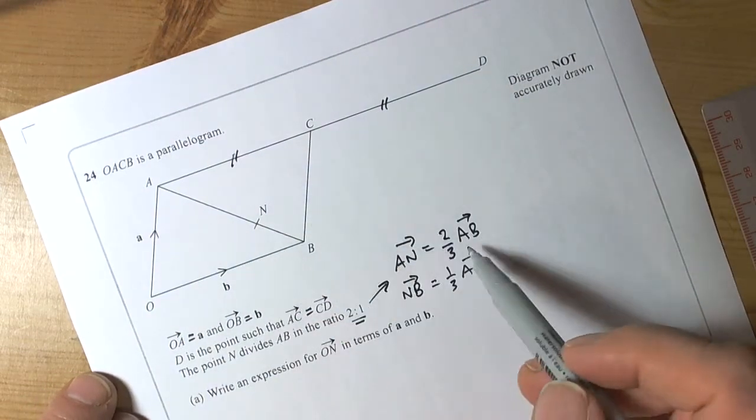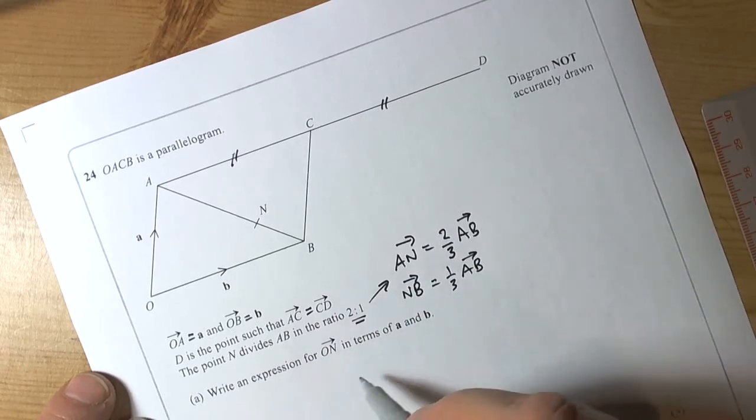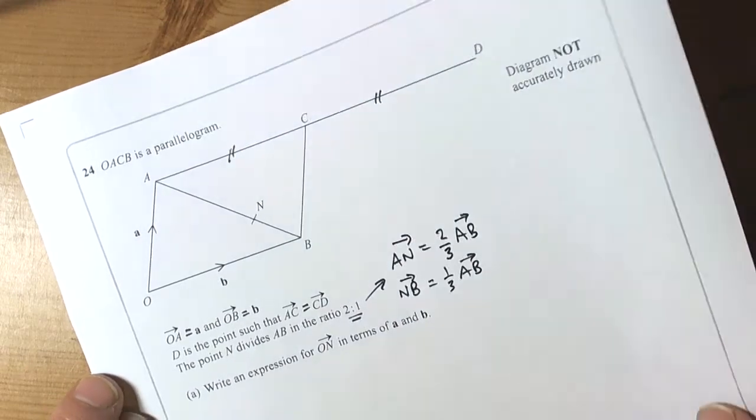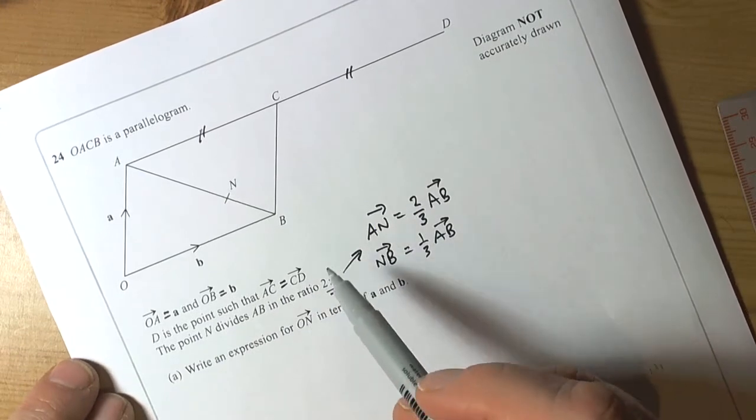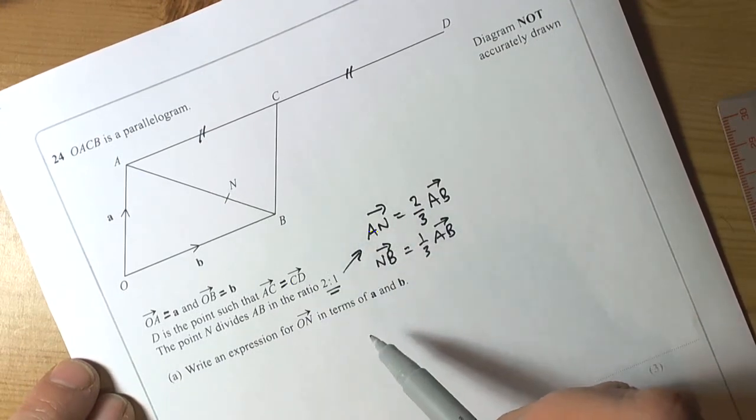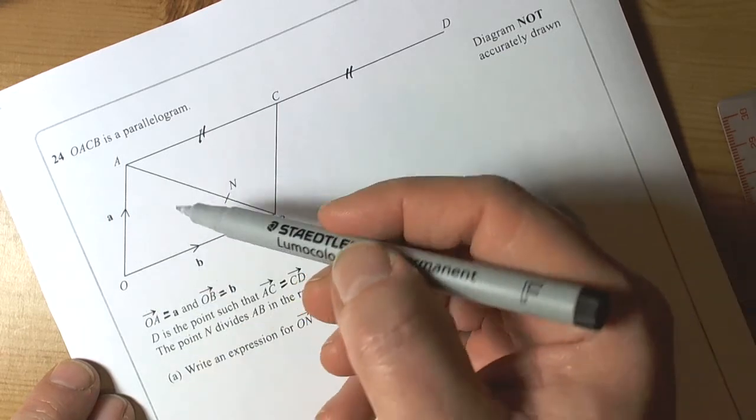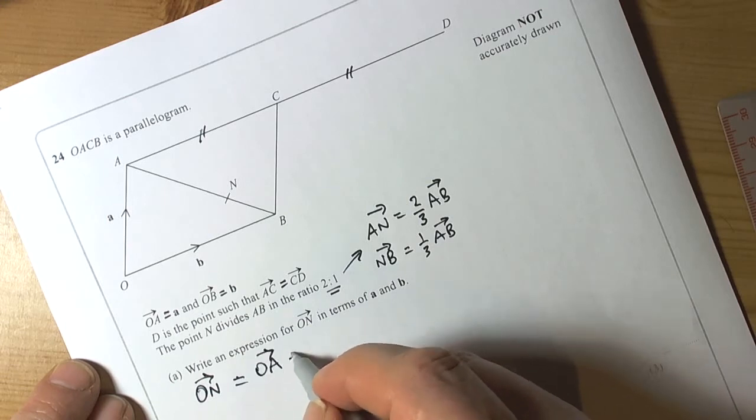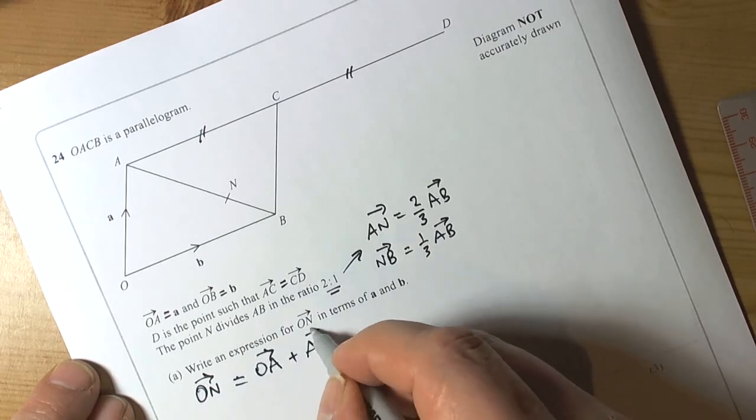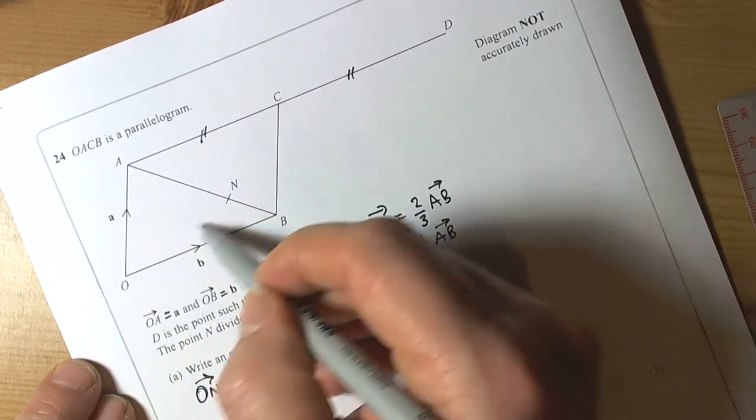So that's all the information put onto the diagram and we've recognized what the ratio is explaining to us. Now we can go ahead and answer the question. So vectors to me is always thinking of a journey from one position to another, and it doesn't matter which journey you take, the resultant vector will always be the same. So ON, to get to ON I'm going to take the journey OA plus AN.